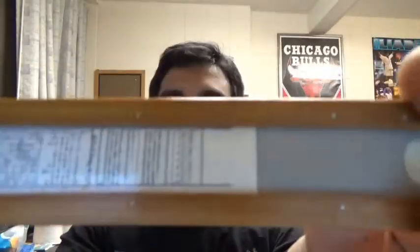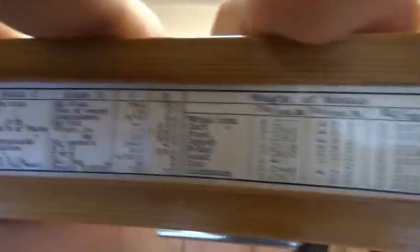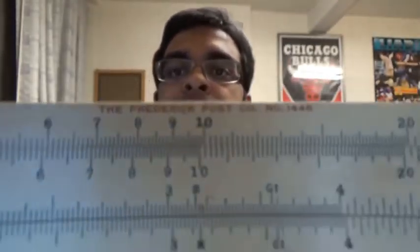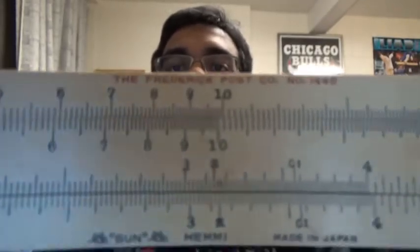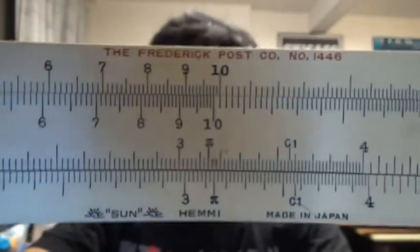Opening up the case here and this is a wooden slide rule as you can see from the back. So here's a close-up of the sort of cheat sheet that there is on the back there. It's just got a whole bunch of different information and here's the front of the slide rule. You can see it says the Frederick Post Company number 1446 and Sun Hemi made in Japan there.